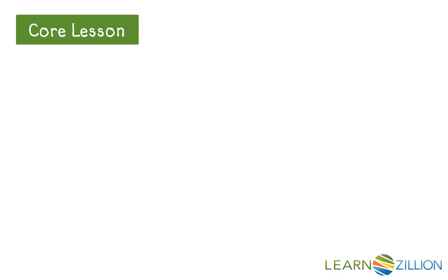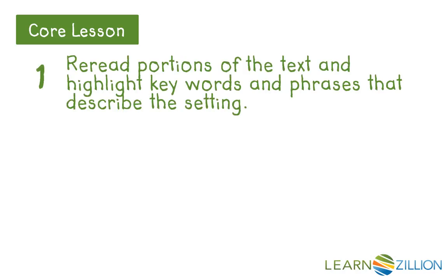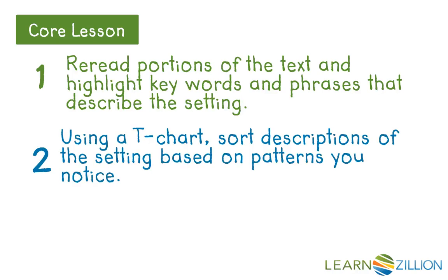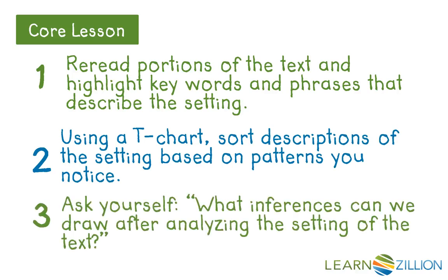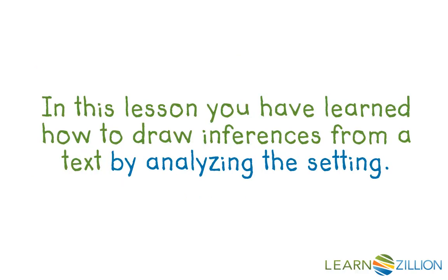So how did we get to this part of the lesson? First, we re-read portions of the text and highlighted key words and phrases that describe the setting. Next, we used a T-chart to sort descriptions of the setting based on patterns we noticed. And finally, we asked ourselves what inferences can we draw after analyzing the setting of the text. In this lesson, you have learned how to draw inferences from a text by analyzing the setting.